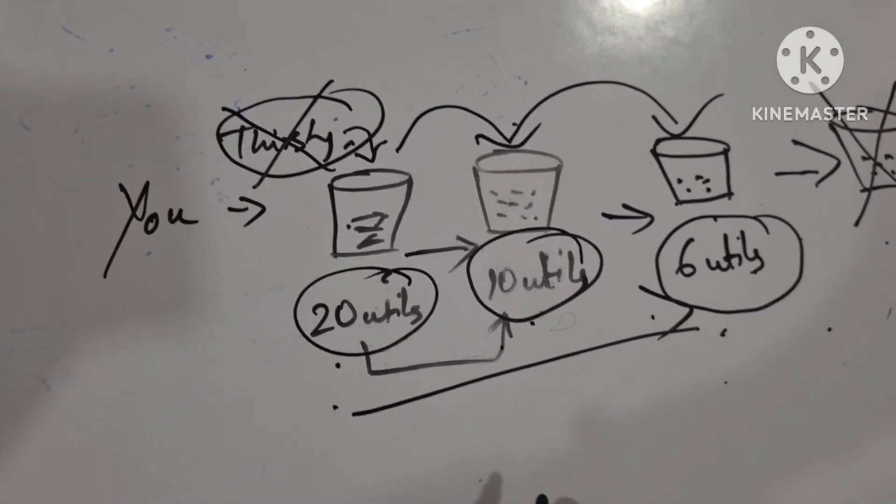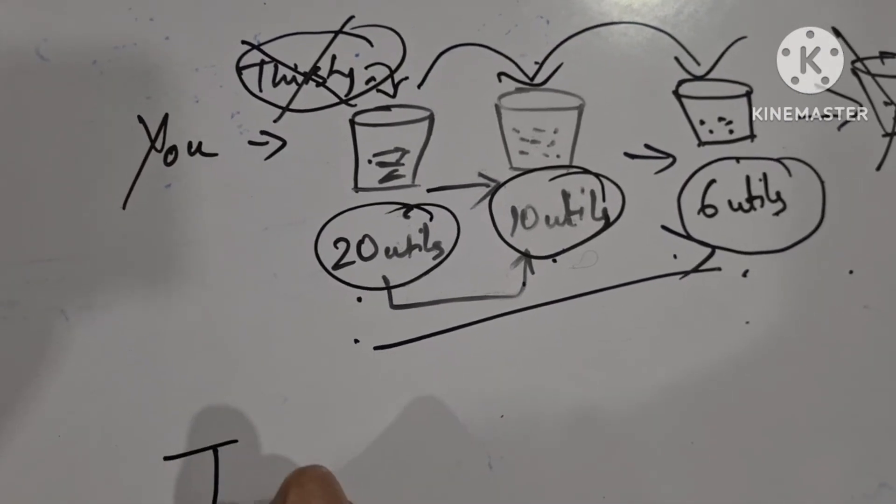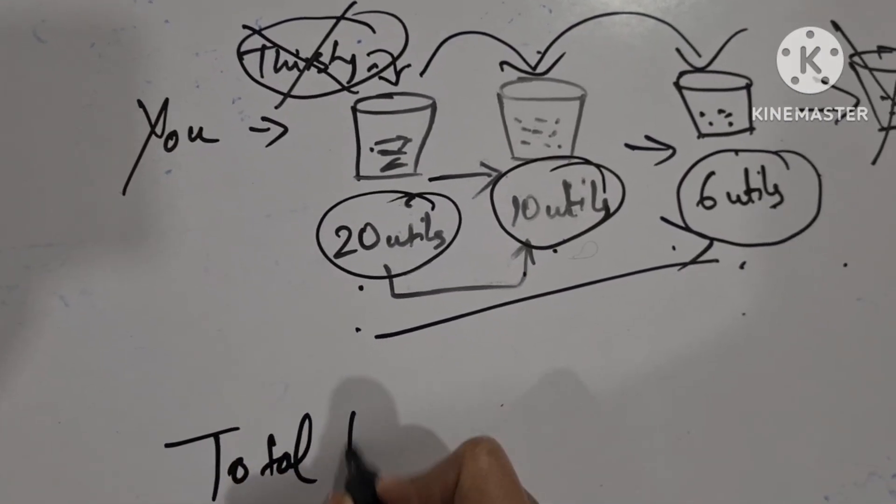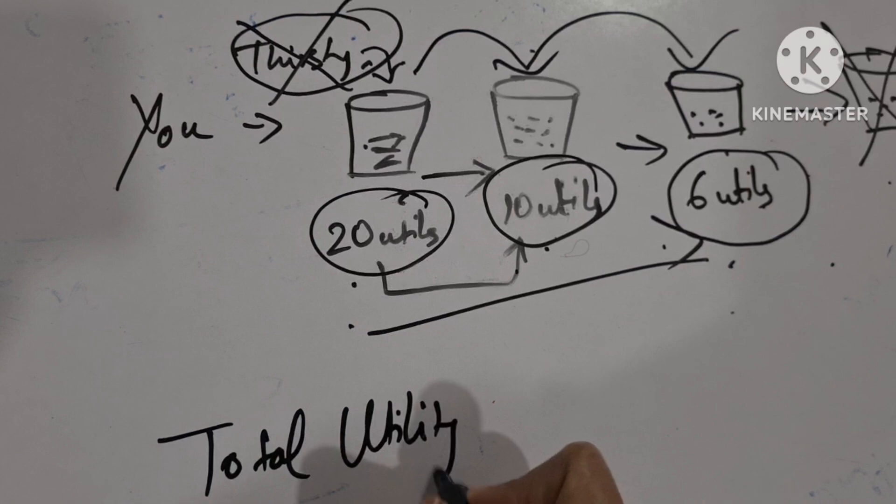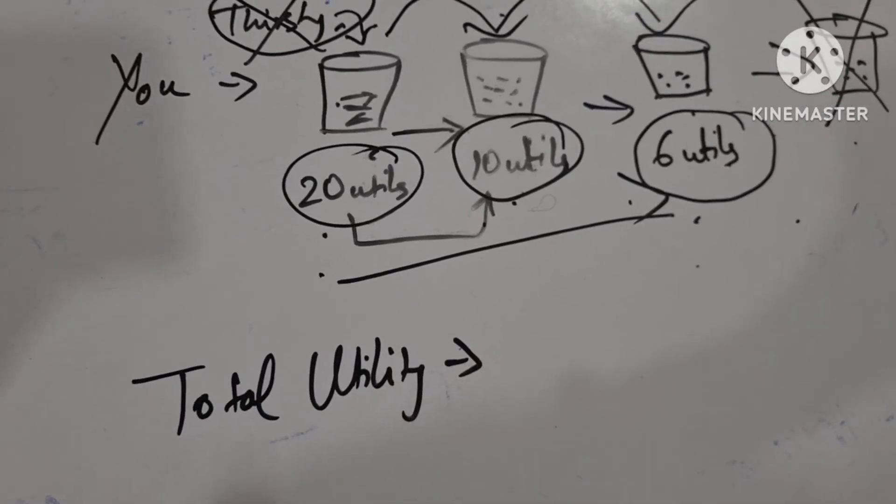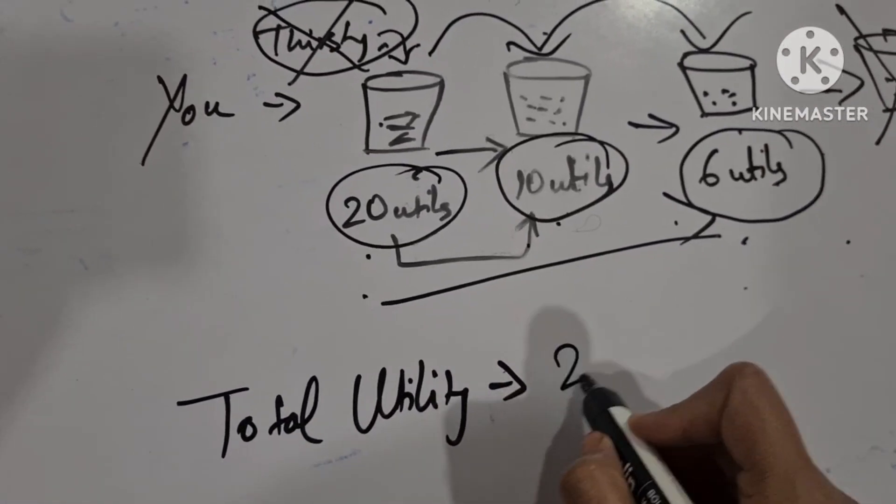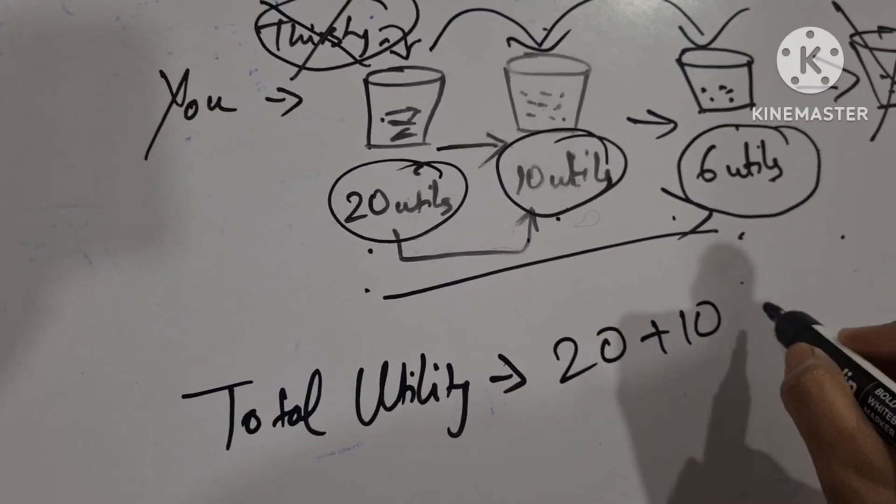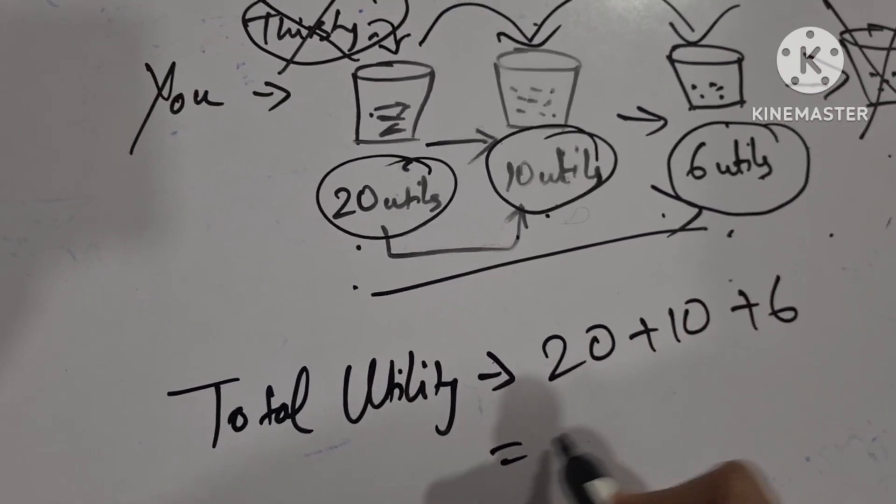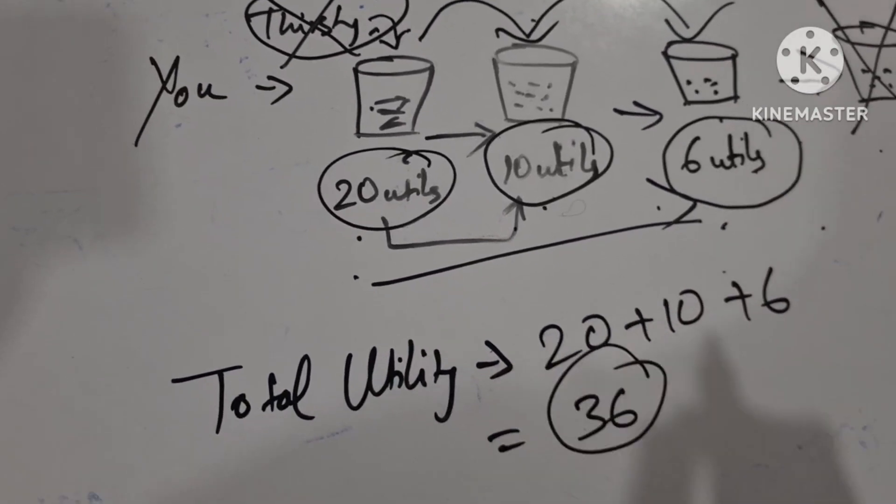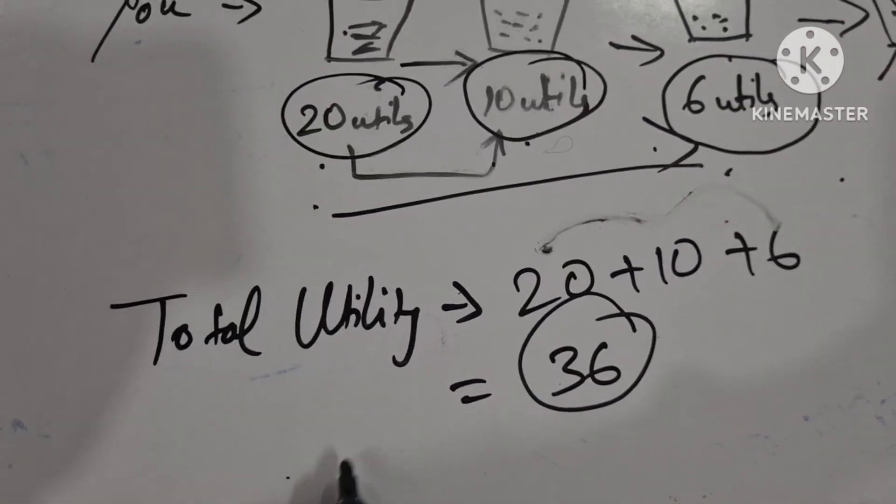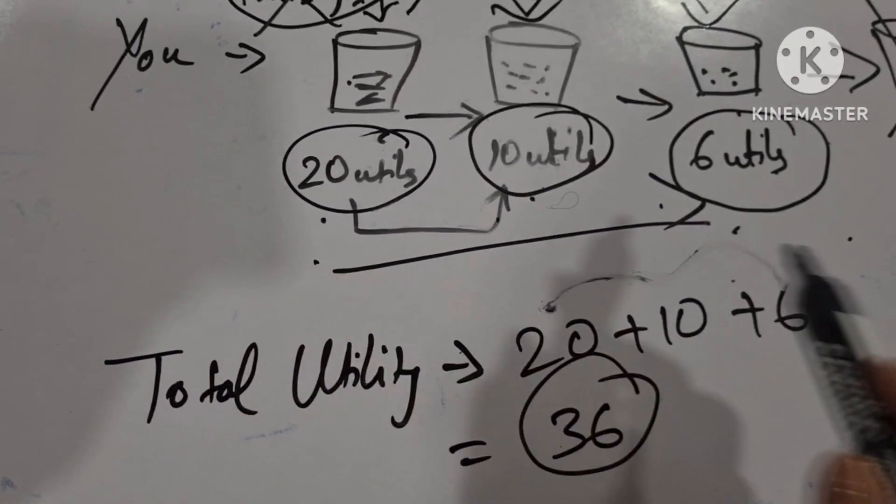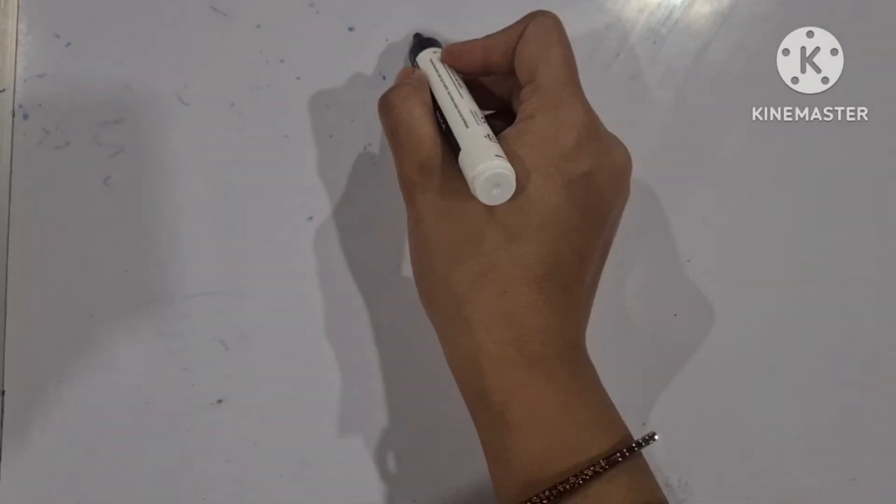Now, if I say, what is the total utility derived? Total utility. If I say you, tell me what is the total utility? What will you do? 20 plus 10 plus 6. So, it comes to 36. This is the total utility. Total utility is the sum total of all the marginal utility. Now, let us see it with a figure.